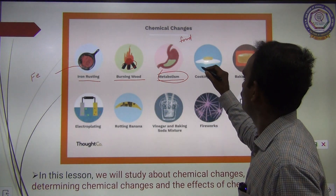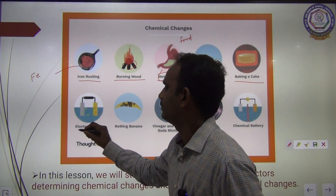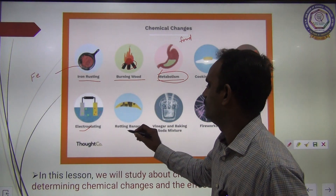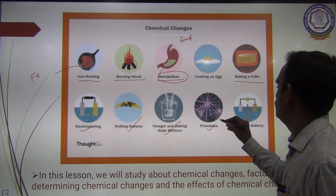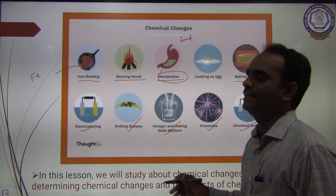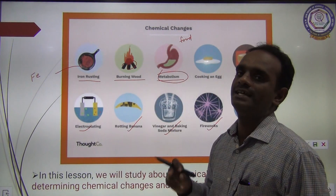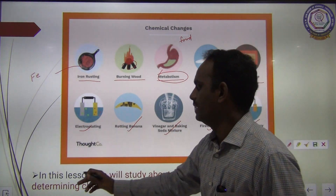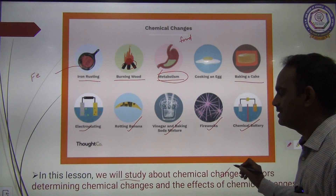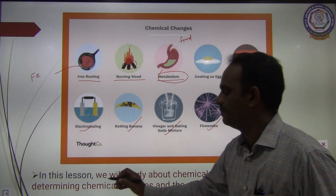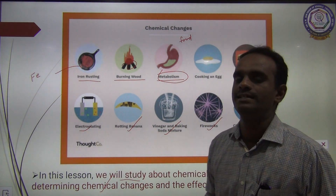The next examples of chemical changes include: cooking food items, baking a cake, electroplating, rotting banana, vinegar and baking soda mixture, firewoods, and chemical battery. All these are some of the examples of chemical changes. In this lesson, we will study about chemical changes, factors determining chemical changes, and the effect of chemical changes in detail.